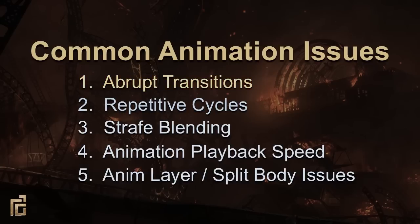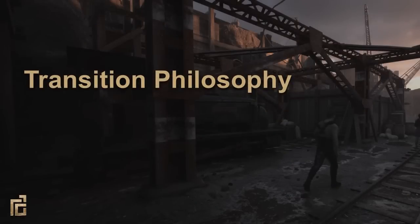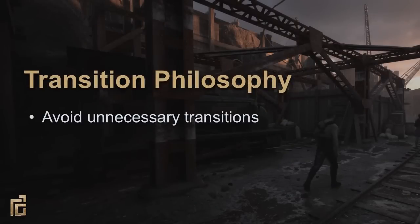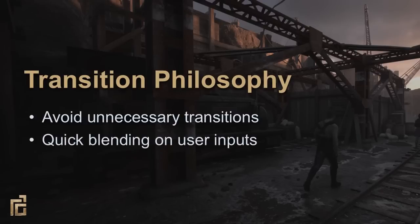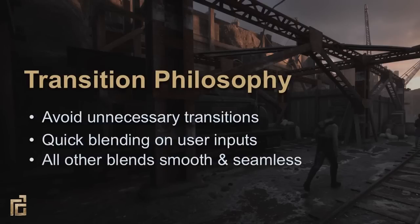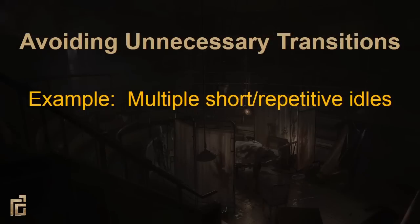Let's start with abrupt transitions. One of the biggest issues with games is harsh blending — we typically see one animation abruptly change to another in a tenth of a second, which breaks immersion. So here's our philosophy on animation transitions. First, if you don't need multiple animations, avoid the transition entirely. There are still places where you need quick blending — players expect immediate feedback on input — but all other blendings should be invisible to the player. A good example of an unnecessary transition can be found in stand idles. They're typically made up of multiple short animations that randomly cycle, and the seams are noticeable.